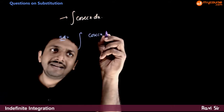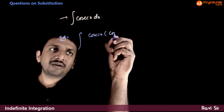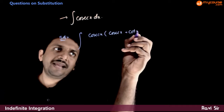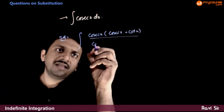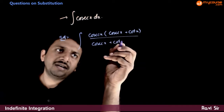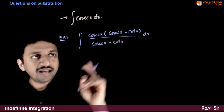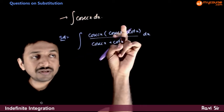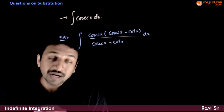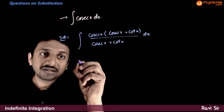The technique is: I'll multiply cosecant x with (cosecant x plus cot x) in both the numerator and denominator. So now, what is the simplification that we get when I do this?